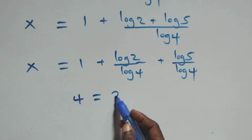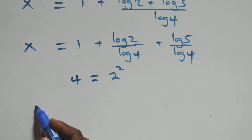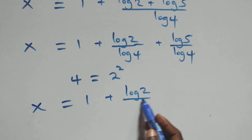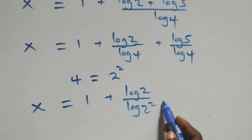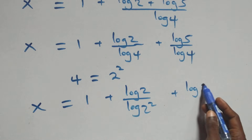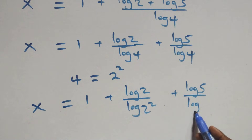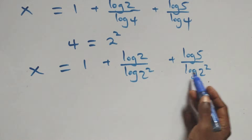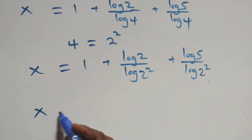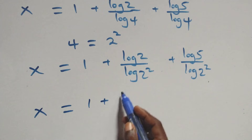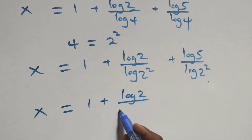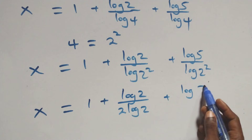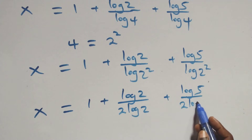All we have becomes x equals to 1 plus log 2 over log(2 squared) plus log 5 over log(2 squared). Then we apply the power of logarithm — the 2 comes out here and also here. This becomes x equals to 1 plus log 2 over 2 log 2 plus log 5 over 2 log 2.